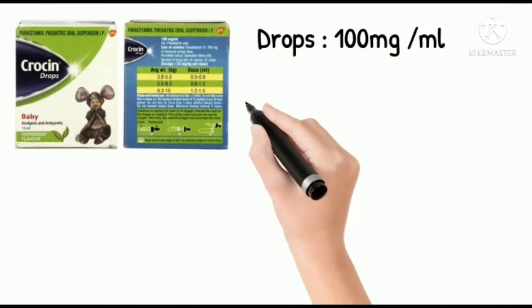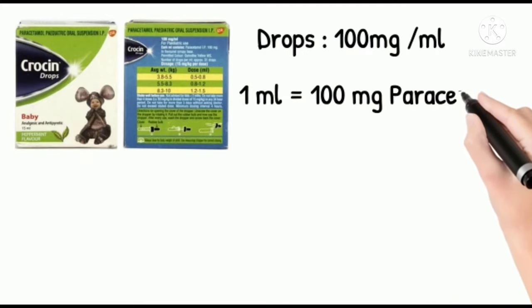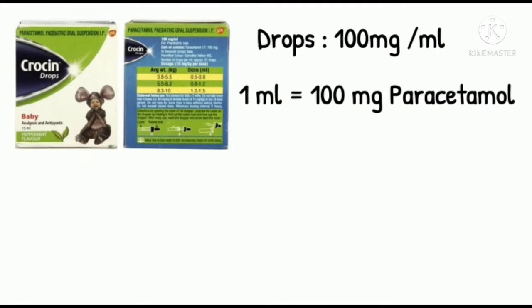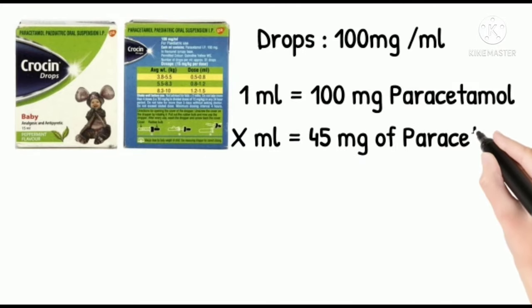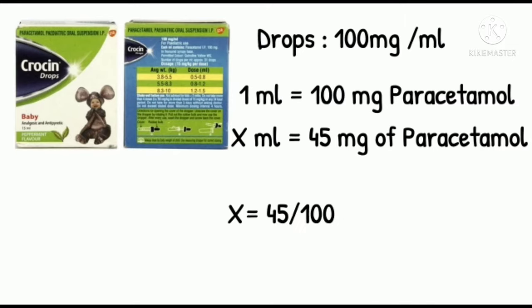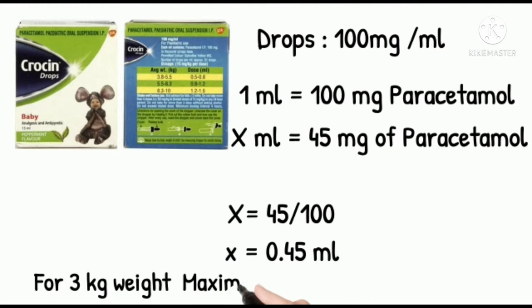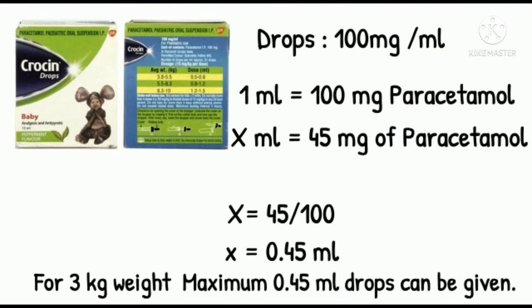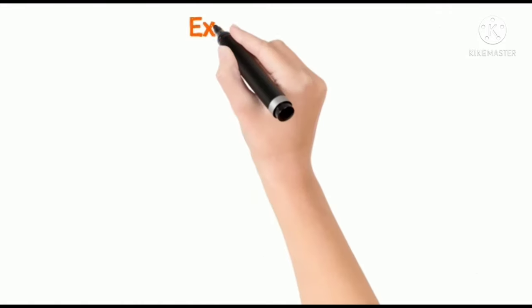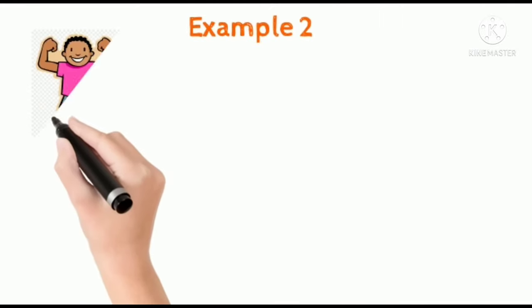If the doctor advises paracetamol drops, generally paracetamol drops are available as 100 milligrams per ml — that is, 1 ml of paracetamol drops contains 100 milligrams. So 45 milligrams of paracetamol is present in how much ml? 1 by x equals 100 by 45, that is approximately 0.45 ml. So for a 3 kg body weight baby, the maximum dosage of paracetamol is 0.45 ml per dose.